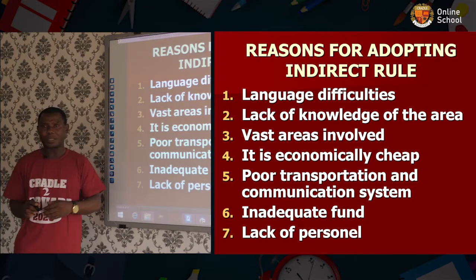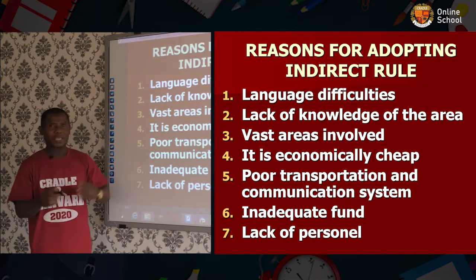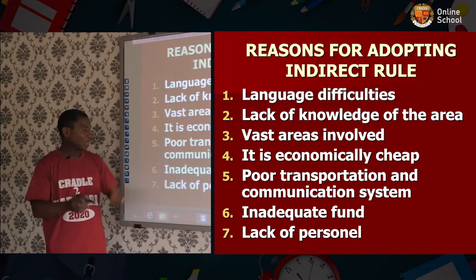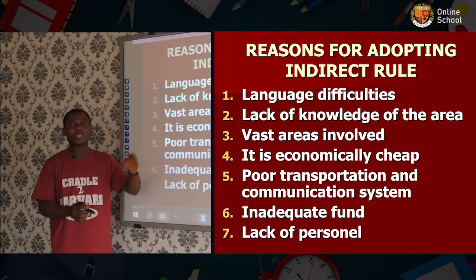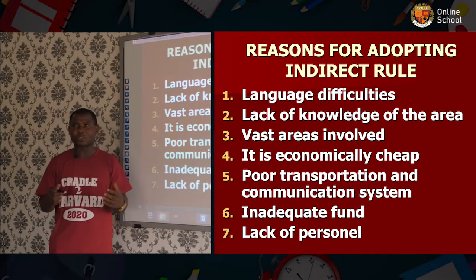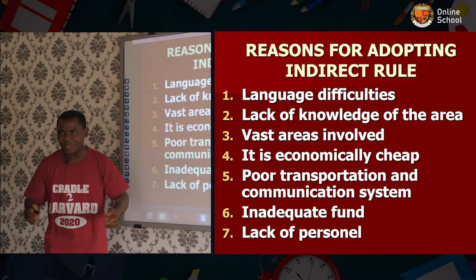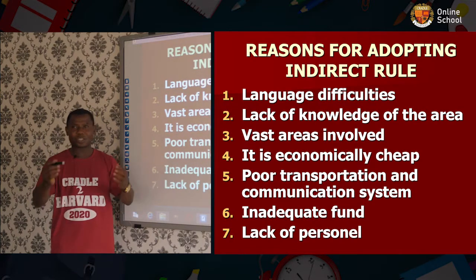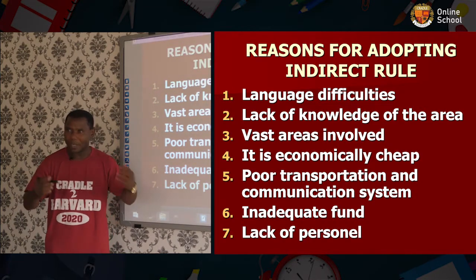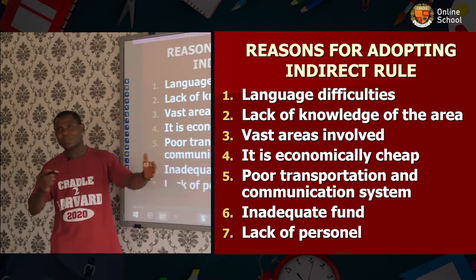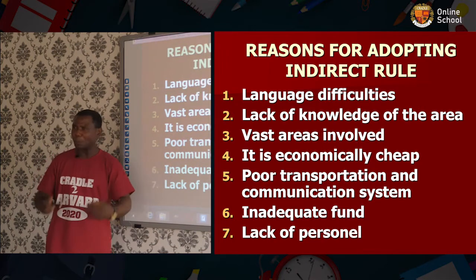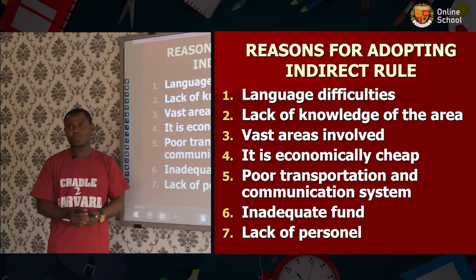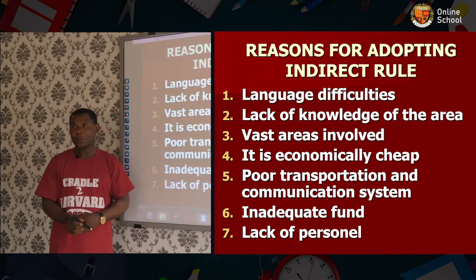Why did they use indirect rule? Reasons for adopting indirect rule. There are several reasons, but I will give you seven. Reason one: language difficulty. During that time there was a lot of difficulty — many people couldn't speak English, and the British could not speak Hausa, Fulani, or our local languages. Reason two: lack of knowledge of the area. As strangers, there is no way they could know areas they are not familiar with.